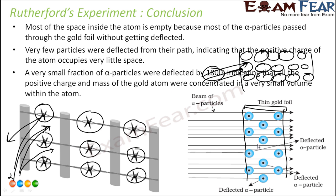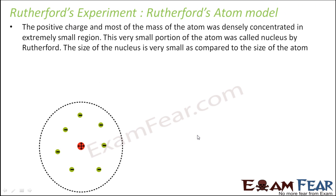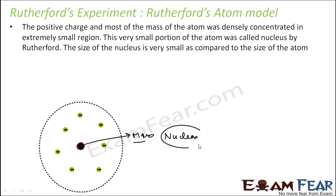With this experiment, Rutherford concluded that the Thomson model was incorrect. In the atom there is something called a nucleus, which has most of the mass, and electrons are around it. He proposed that the positive charge and most of the mass of the atom are densely concentrated in an extremely small region called the nucleus — Rutherford was the first to use this term.